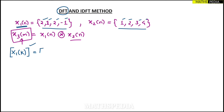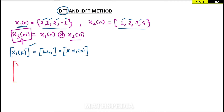x1(k) matrix is equal to the W_N matrix — this is nothing but the twiddle factor for the four-point DFT — multiplied by x1(n) matrix. Since we have four elements, x1(k) will be x1(0), x1(1), x1(2), and x1(3).